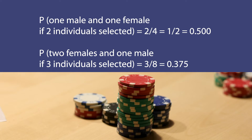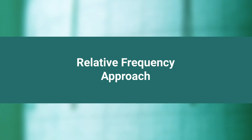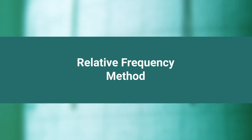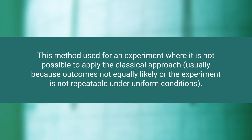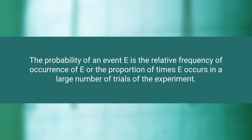This is called the classical method. The relative frequency method is more experimental in nature — that is the reason we usually call it the experimental method also. This method is used for an experiment where it is not possible to apply the classical approach, usually because outcomes are not equally likely or the experiment is not repeatable under uniform conditions. The probability of an event E is the relative frequency of occurrence of E, or the proportion of times E occurs in a large number of trials of the experiment.